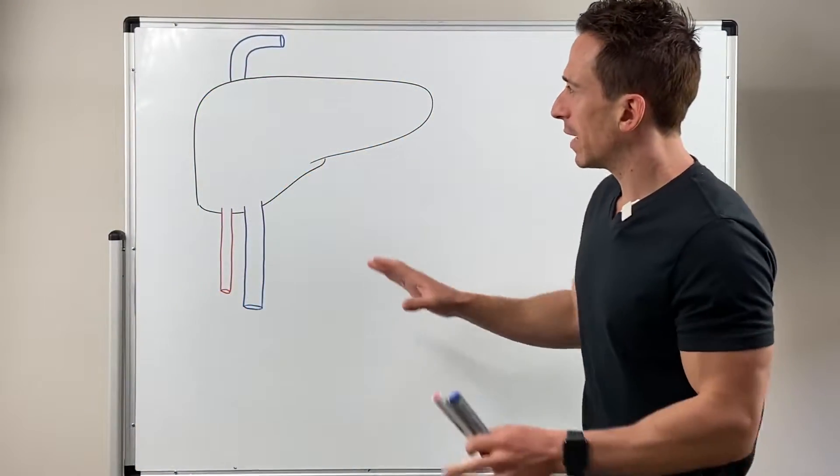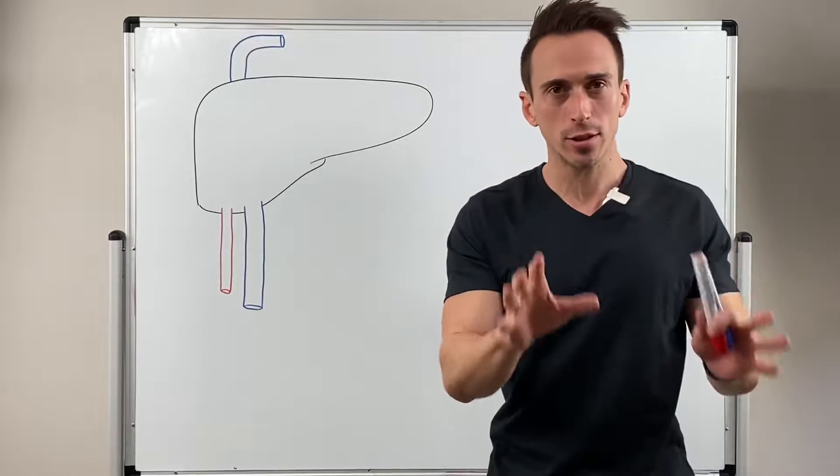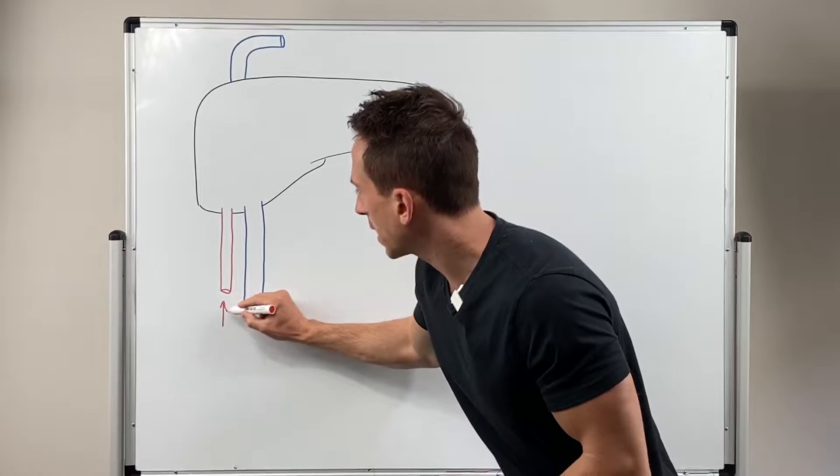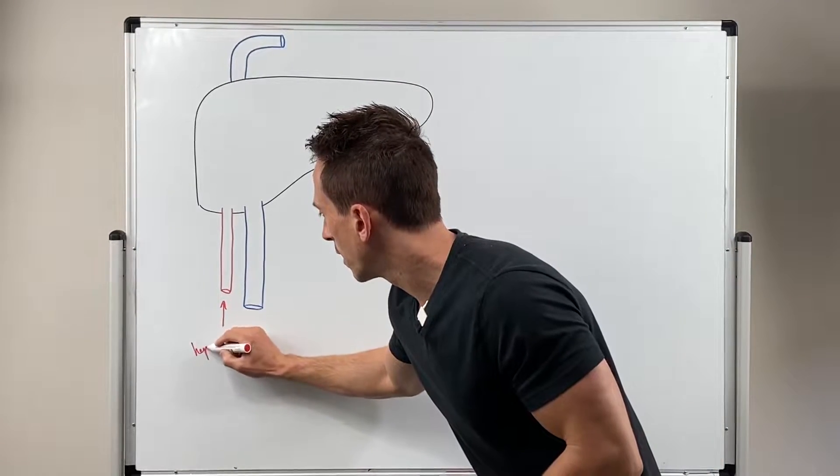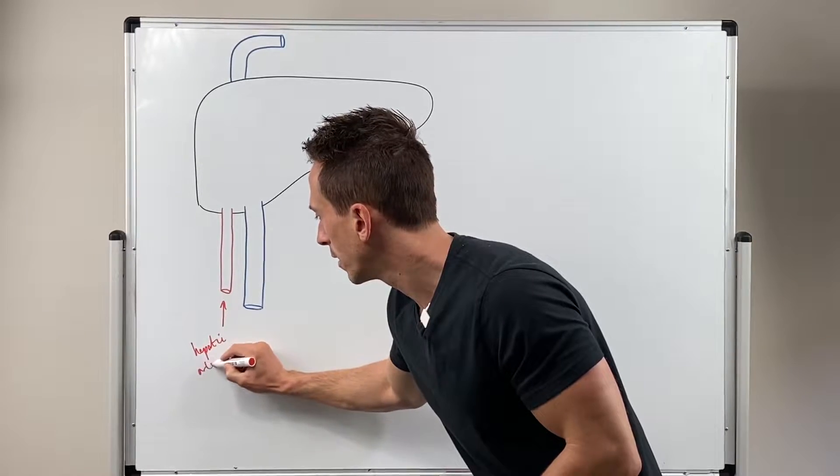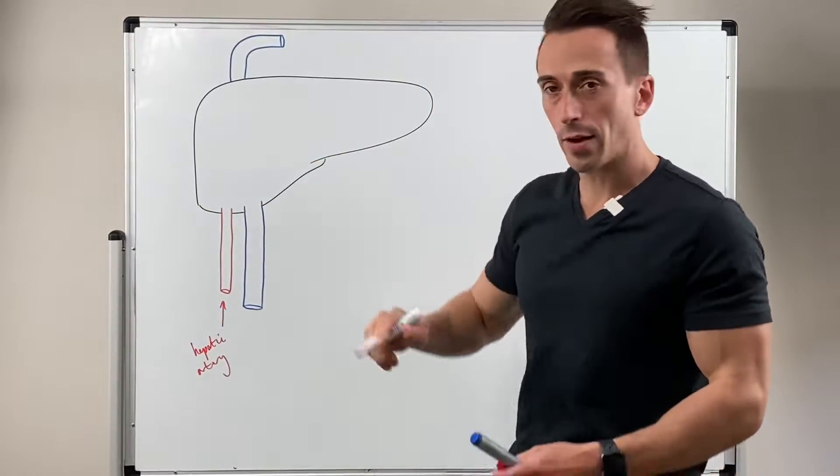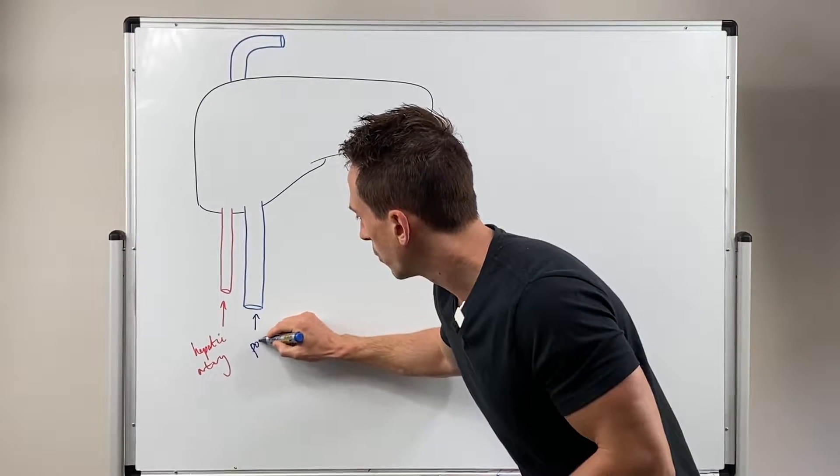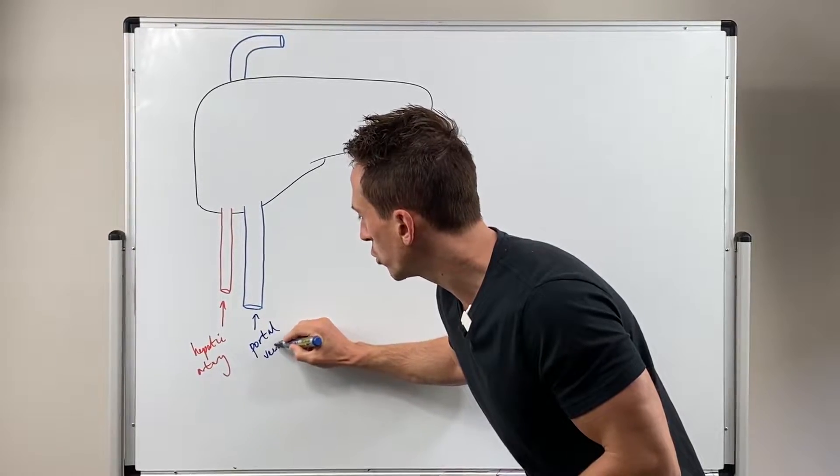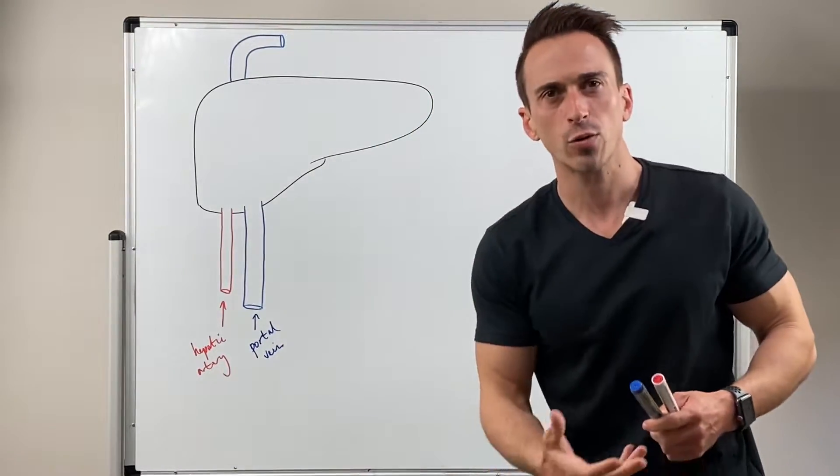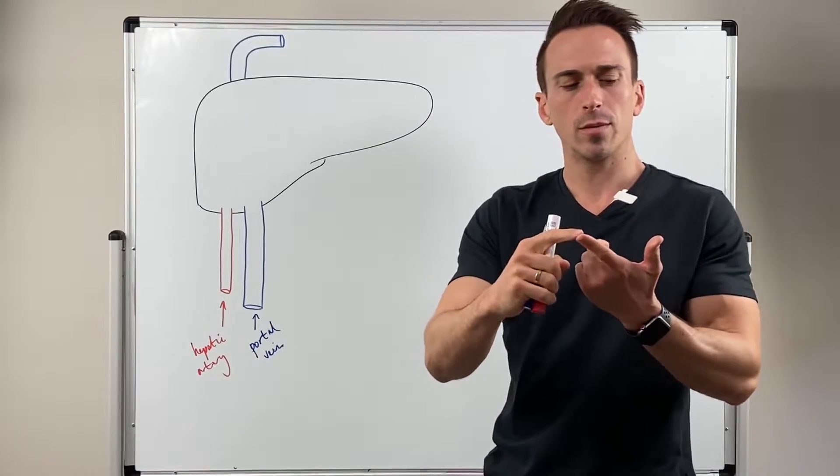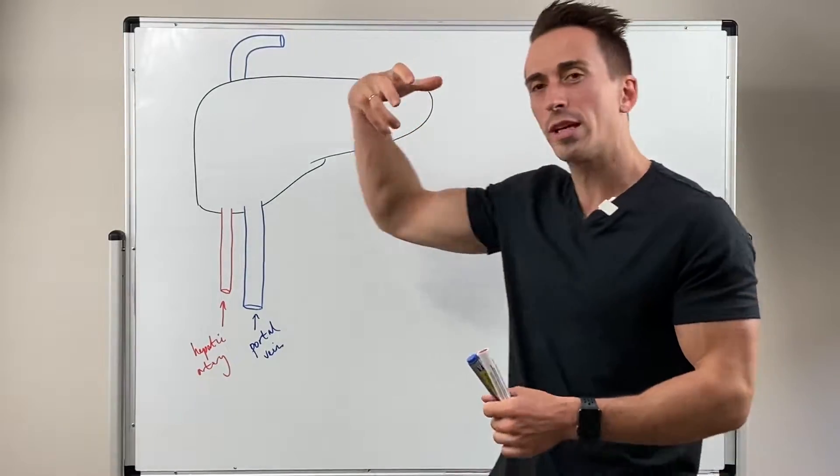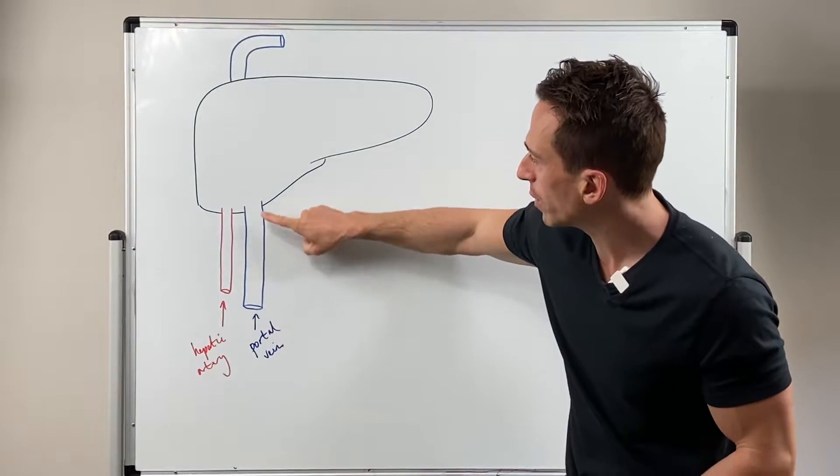When it comes to the blood supply that goes to the liver, we've got the hepatic artery bringing oxygenated blood to the liver, and we've also got the portal vein coming in which is bringing all these nutrients that are draining from the digestive viscera. This includes blood coming from the colon, small intestines, pancreas, and stomach. We've got all these various vessels draining into the portal vein going to the liver.